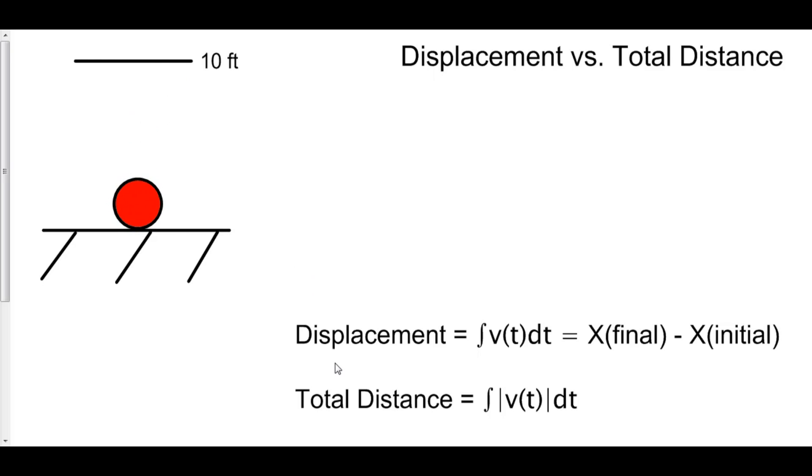Now keep in mind that displacement, also being the integral of velocity, by the fundamental theorem of calculus part two can be rewritten as the antiderivative of velocity, which is position at your final mark minus the position at the initial mark. So it's your final position minus the initial position.